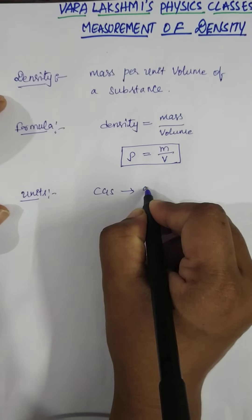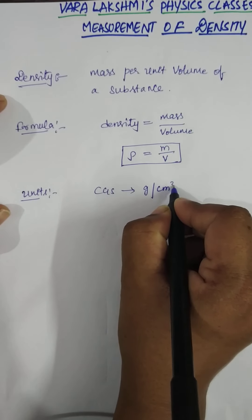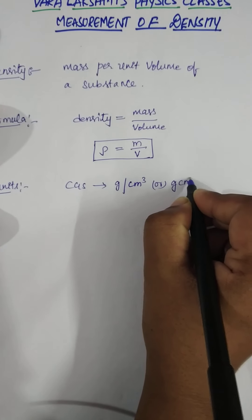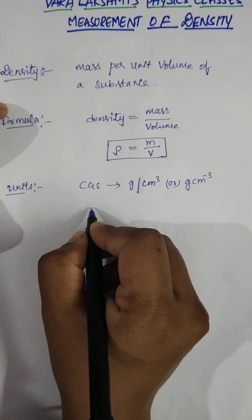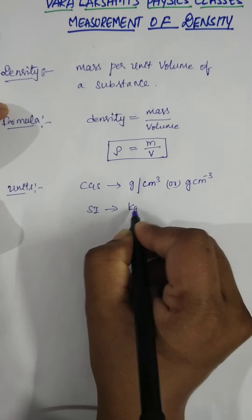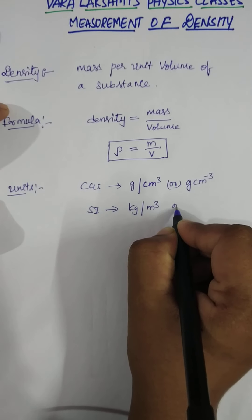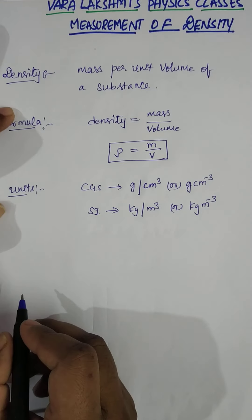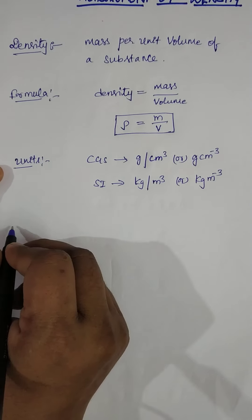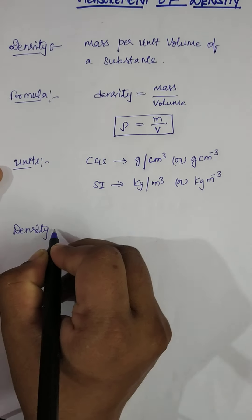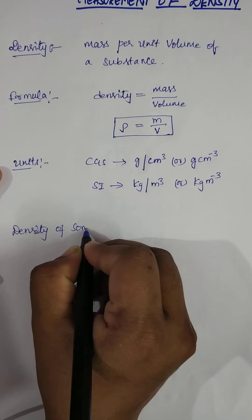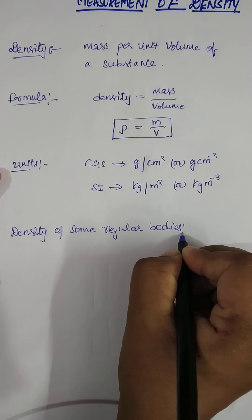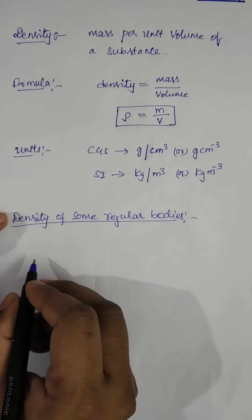Now, the units for density: the CGS unit of density is grams per centimeter cube, which can also be written as gram centimeter to the power minus three. The SI unit of density is kg per meter cube, which can also be written as kg meter to the power minus three.